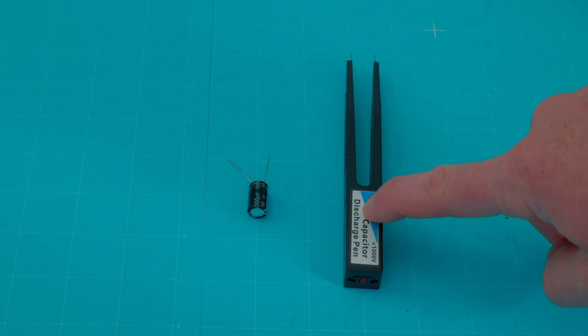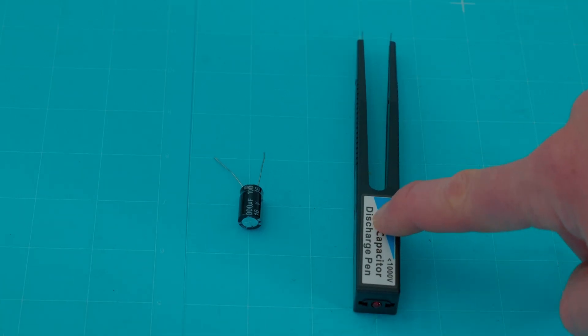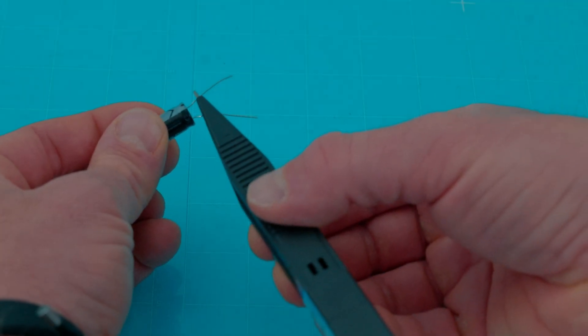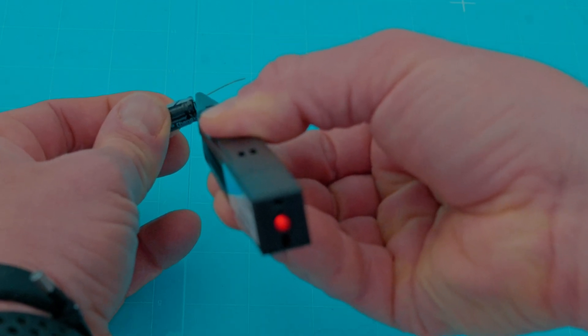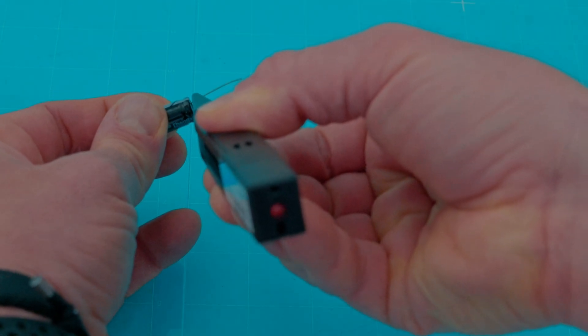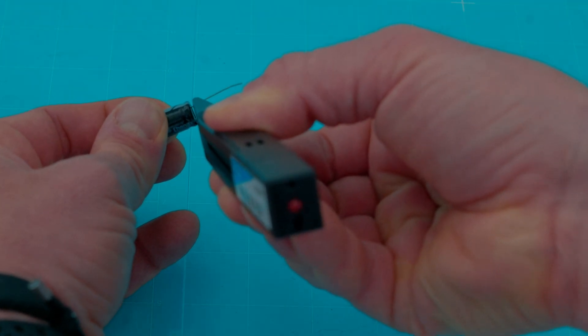Next up is our tweezer style capacitor discharger, and I'll just demonstrate real quick if you were to use this style on this 25 volt. I would just touch one metal contact to each side of the capacitor, and that LED right there, as you can see, lit up and then died down. So it has properly discharged this capacitor.